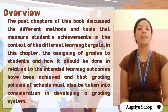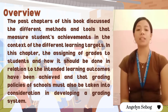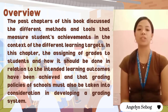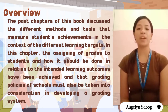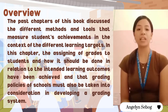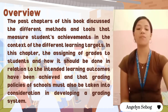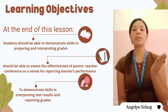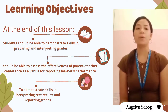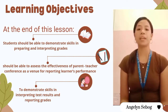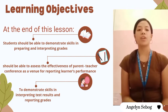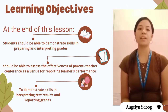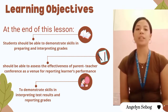Now let's proceed to the overview. The past chapters of this book discuss the different methods and tools that measure students' achievements in the context of different learning targets. In this chapter, the assigning of grades to students and how it should be done in relation to the intended learning outcomes have been achieved, and that grading policies of schools must also be taken into consideration in developing grading systems. Our learning objectives: at the end of this lesson, students will be able to demonstrate skills in preparing and interpreting grades, and assess the effectiveness of parent-teacher conference as a venue for reporting learners' performance.